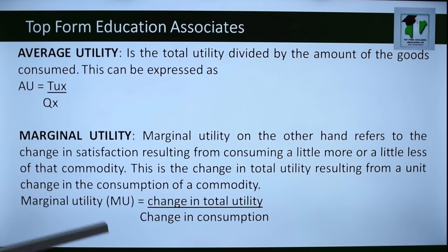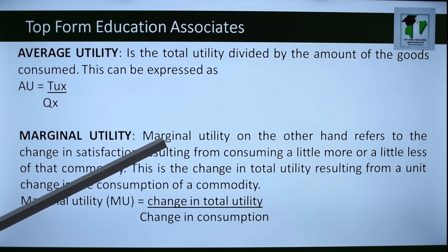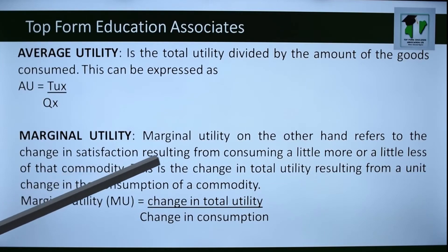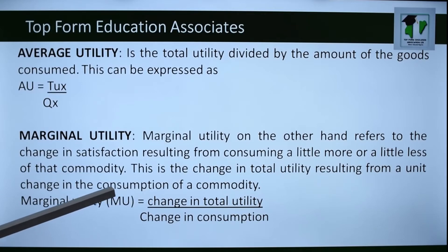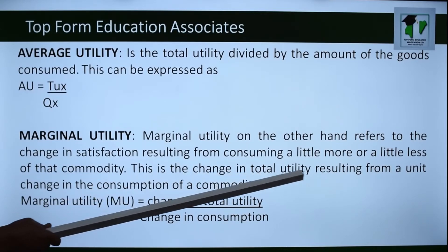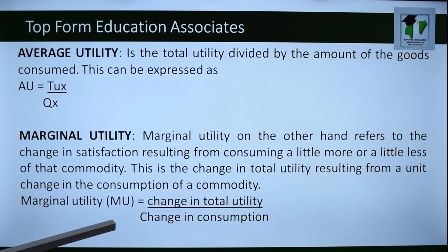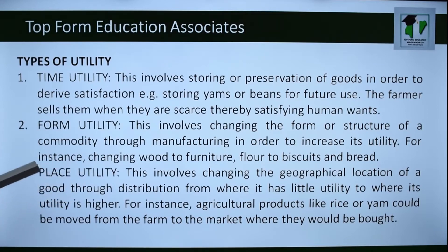Marginal utility is the additional or extra satisfaction derived from consuming more or less of a commodity. It refers to the change in satisfaction resulting from consuming a little more or a little less of that commodity — specifically, the change in total utility resulting from a unit change in consumption. Marginal utility (MU) = change in total utility divided by change in quantity consumed.